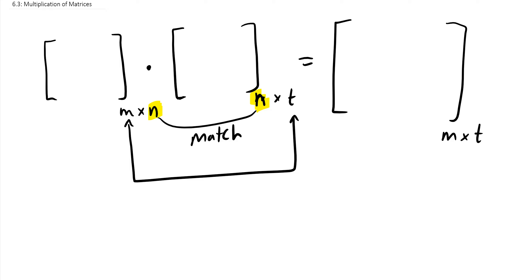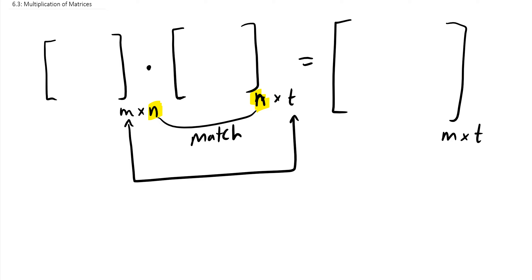Not all matrices can be multiplied by each other. We're only allowed to multiply if the inner dimensions match — whatever the first matrix ends with and the second one starts with must be the same. The result would be an m by t matrix.